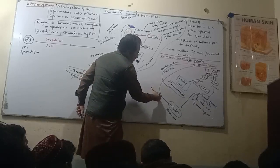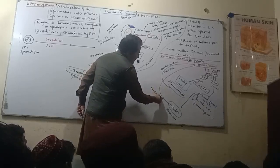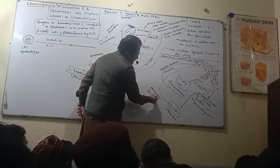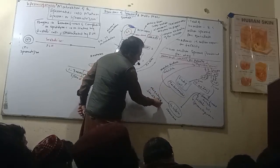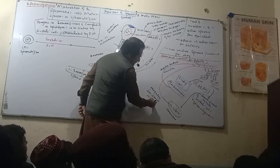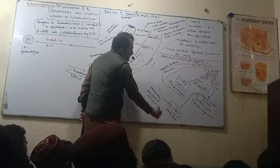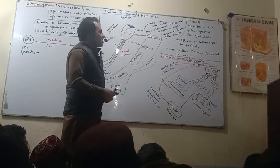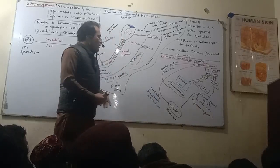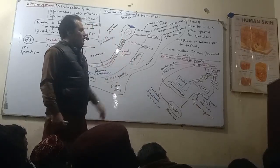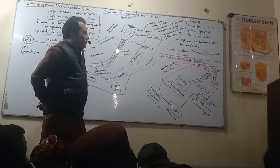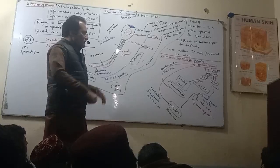Negative feedback inhibition is the regulatory mechanism. It acts to inhibit FSH and LH secretion when hormone levels are sufficiently high.